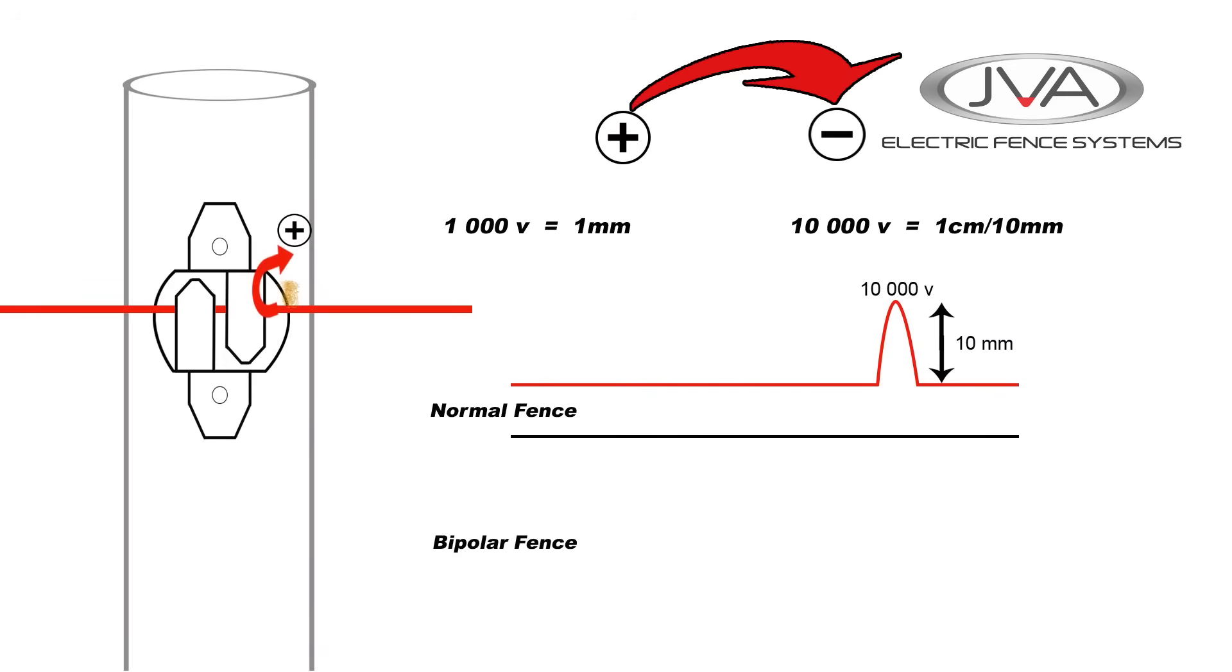What's nice on a bipolar fence is because you've halved the voltage and you've only got 5,000 volts there and 5,000 volts there, you only have a five millimeter gap that the fence can jump. This is important in areas like coastal areas, because on the coast with salt in the air, you have far more arcing and bipolar will reduce this.